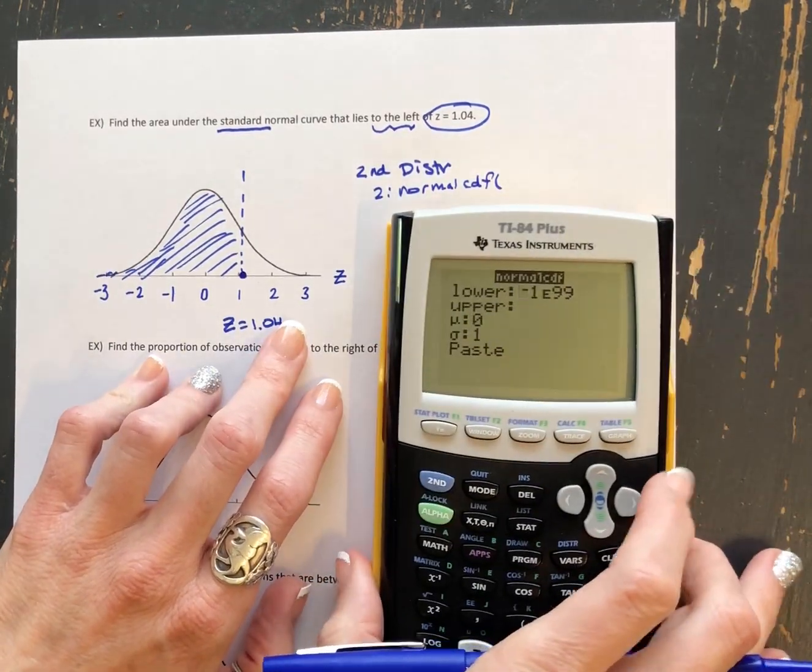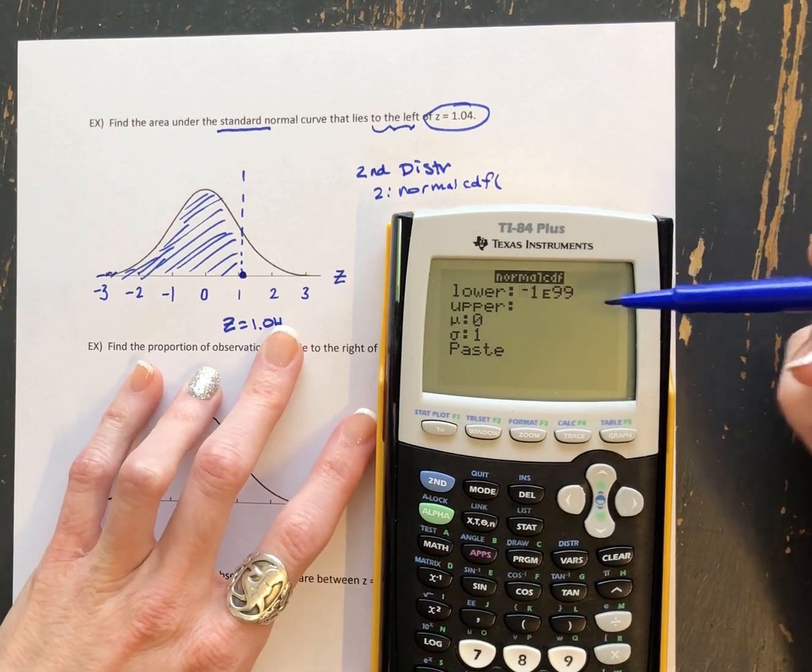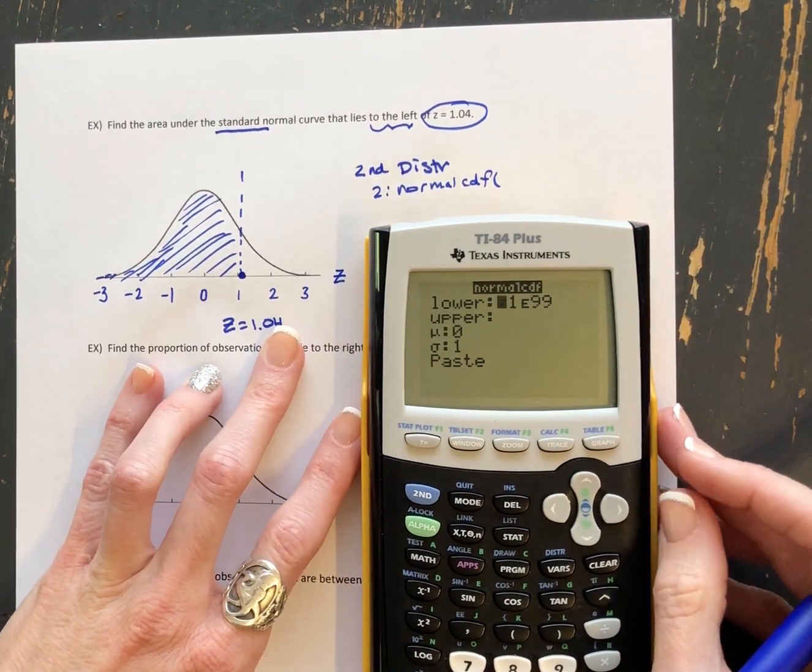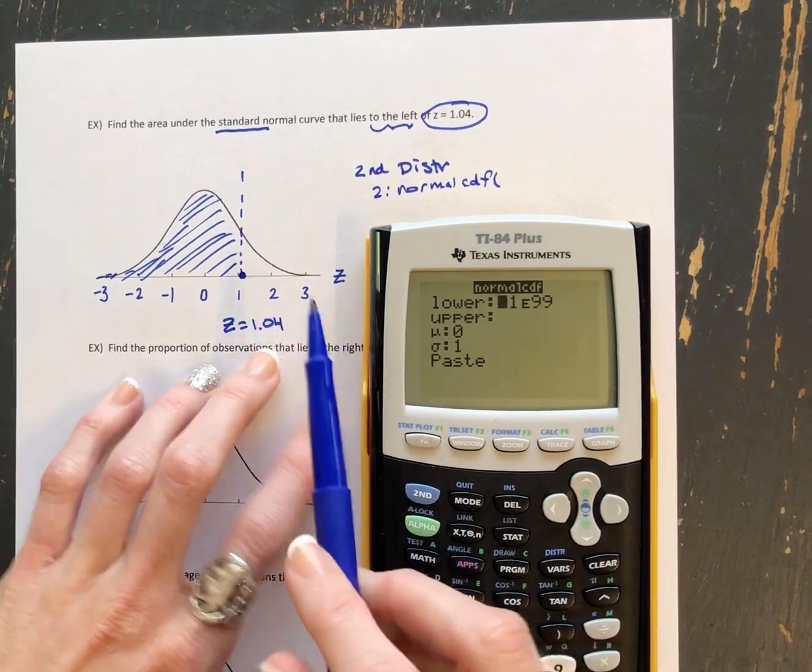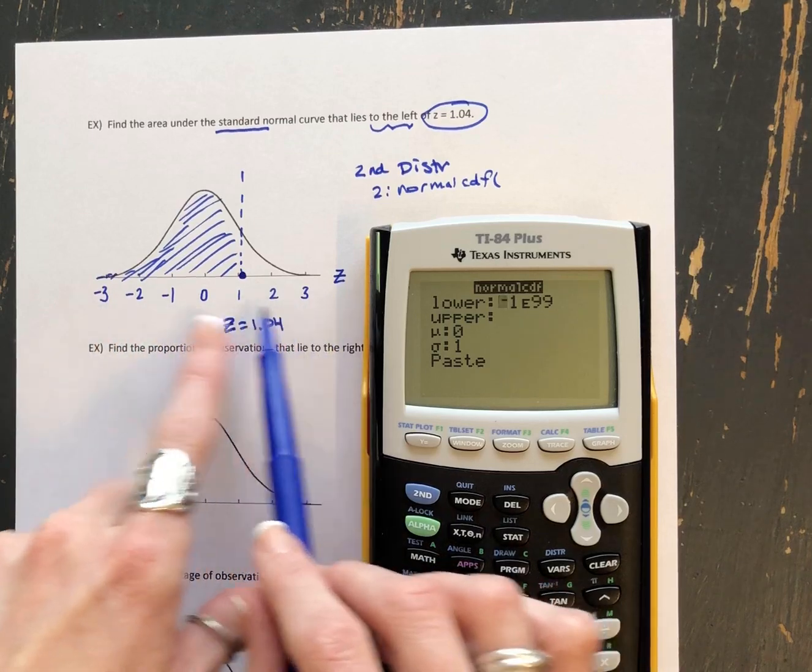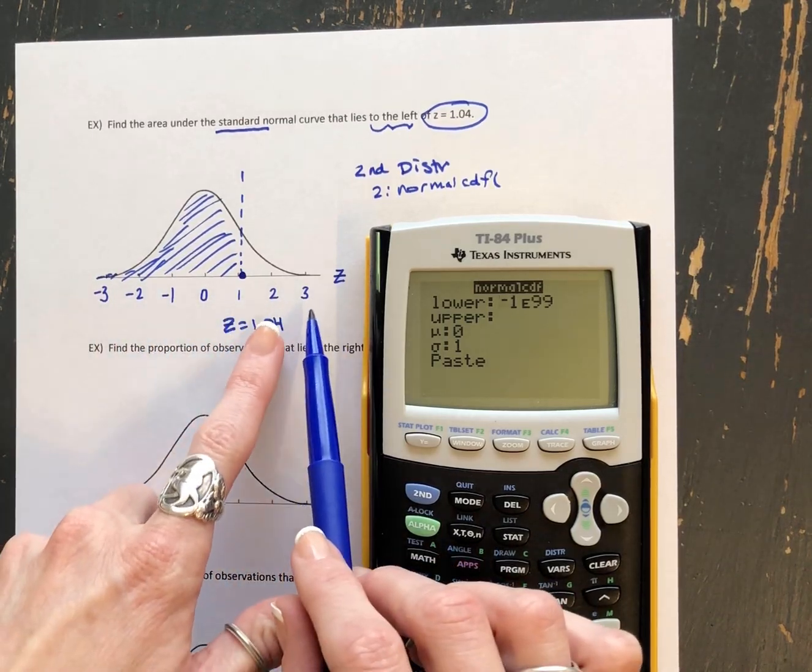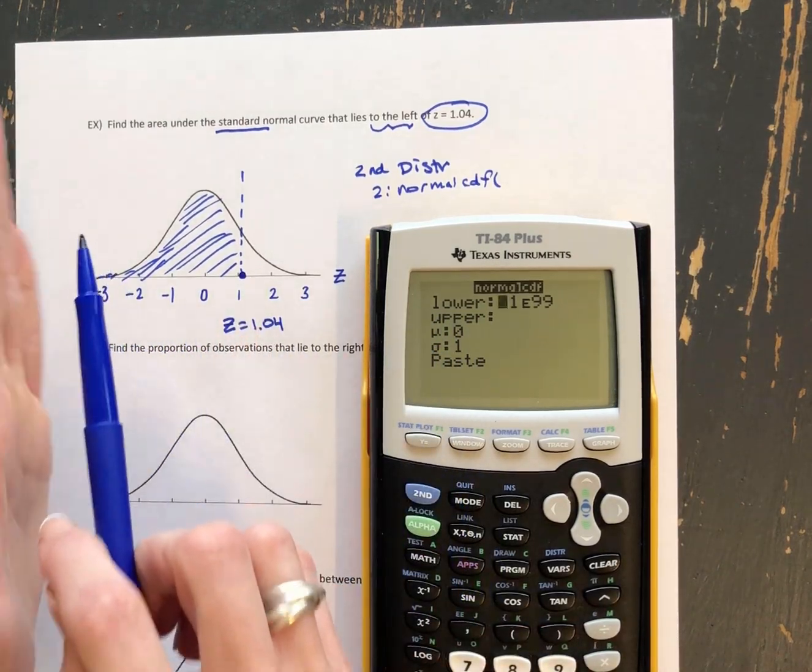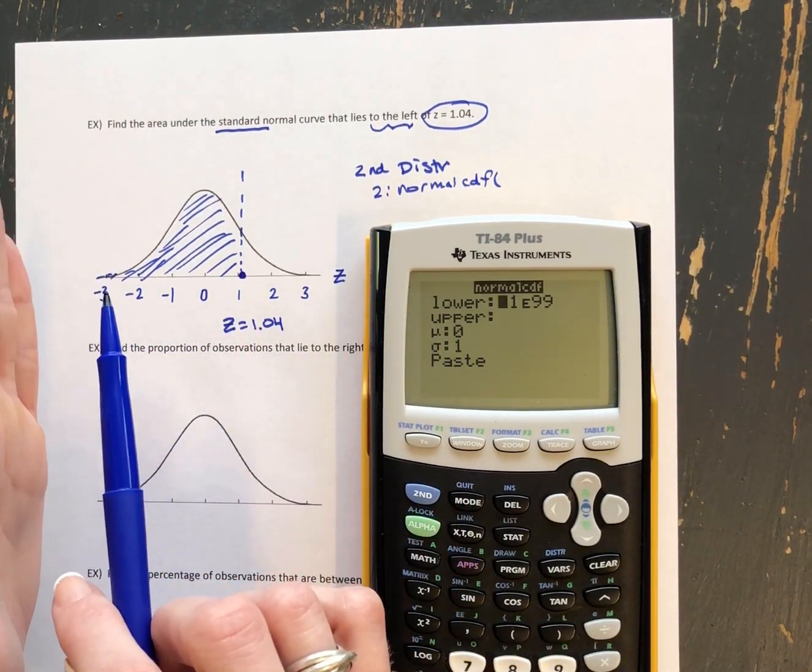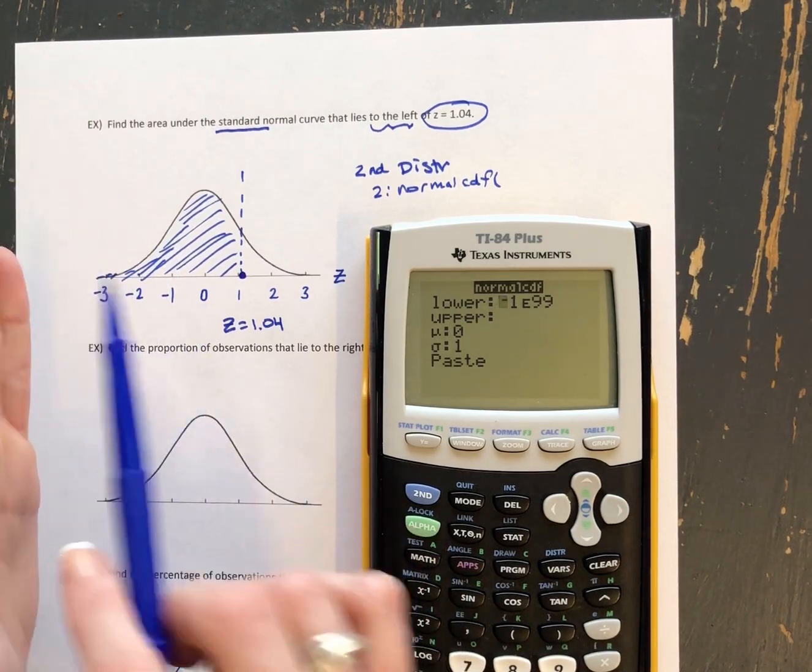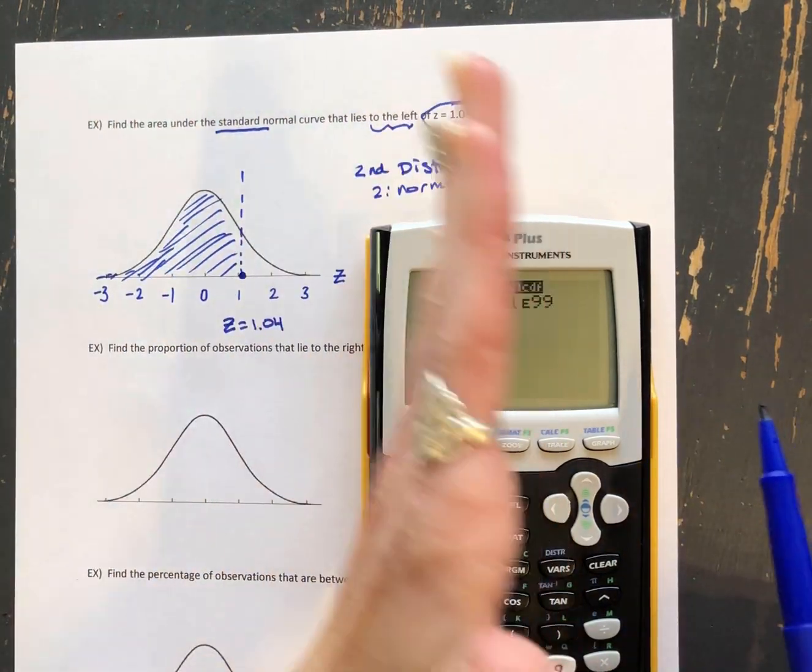And then what it asks us is it asks us lower, upper, mean, and standard deviation. So I want you to think about these distributions with their axis as just being a number line. We're used to looking at number lines. And the lower is always going to refer to the leftmost value where we want to start finding area. So lower is going to be the leftmost value. Upper is going to be the rightmost value.